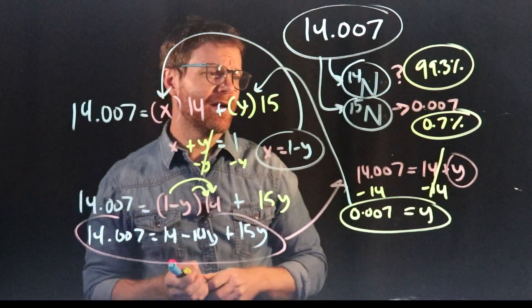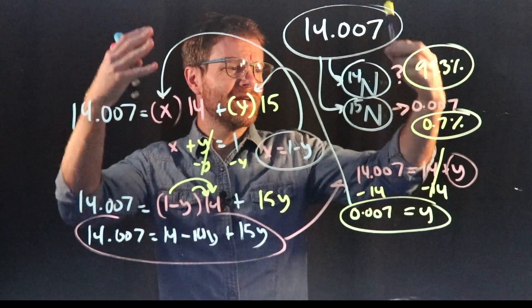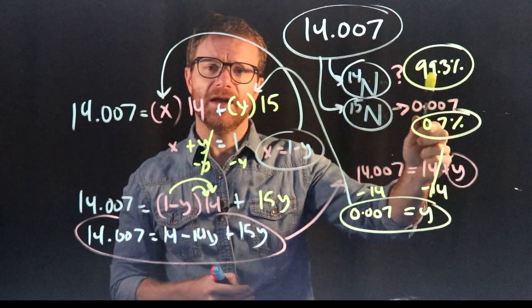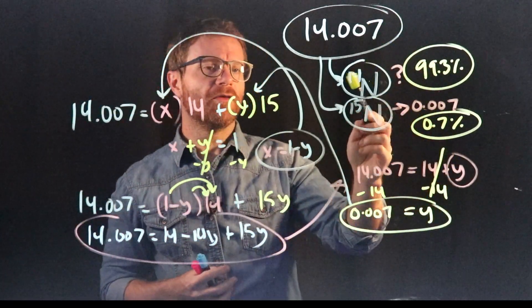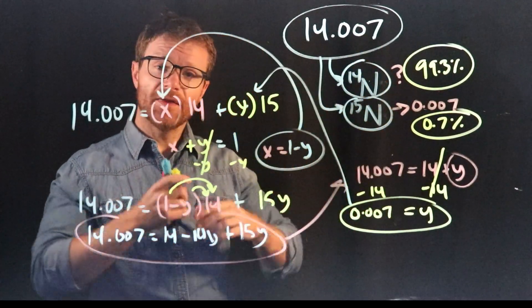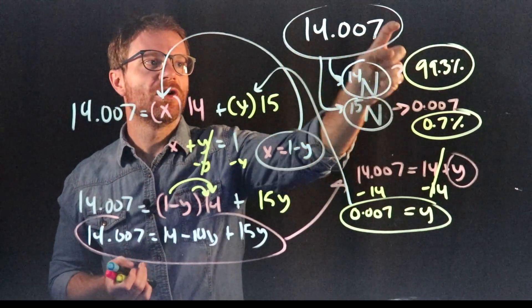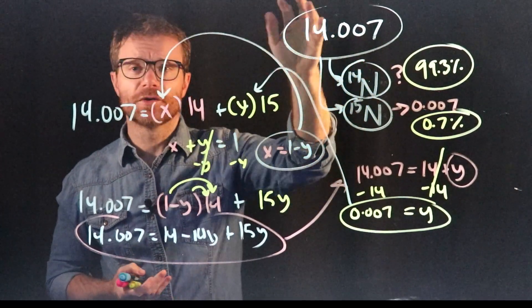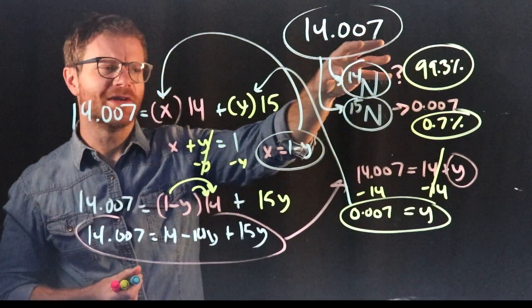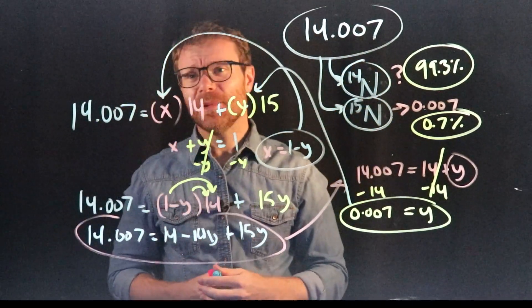Did you see how I got there? If we know how much N15 there is, 0.7 percent, we just take 100 percent, subtract 0.7, and we get 99.3 percent of all nitrogen out there in the world is N14. And again, that tracks, because we expect it to be a big number, because the average, 14.007, is much closer to 14 than it is to 15. So it kind of makes sense.